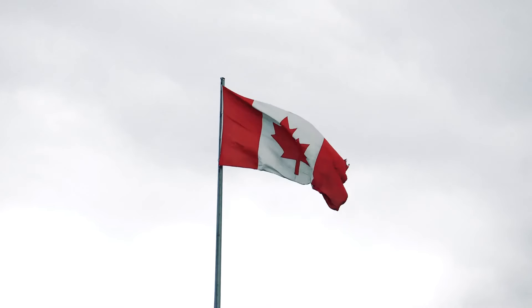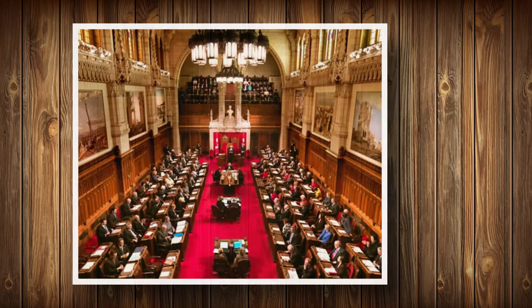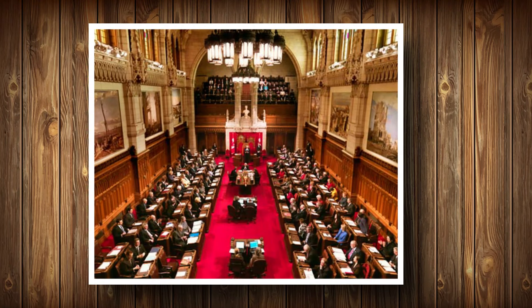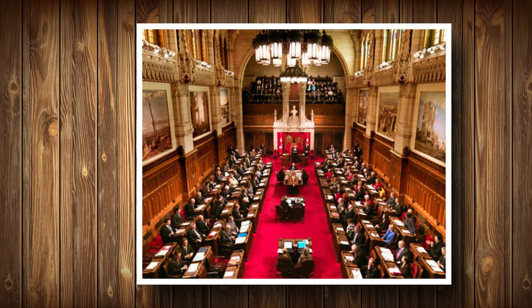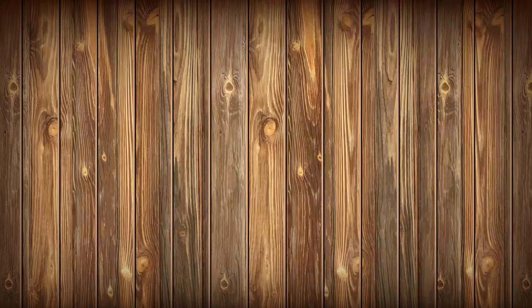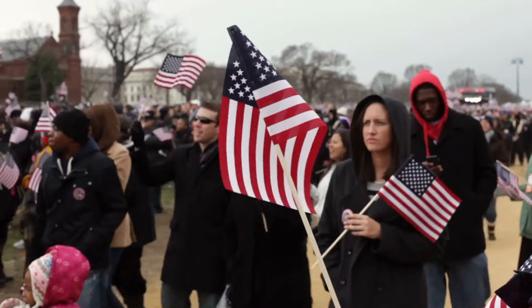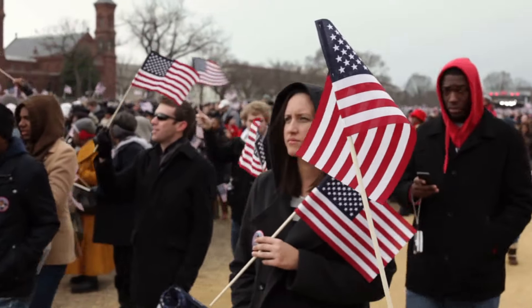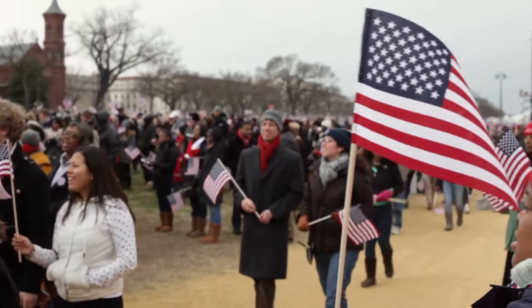Canada has three levels of government: federal, provincial, and municipal. Each of the provinces has its own Parliament, Legislative Assembly, or National Assembly in Quebec. The federal government has three branches: the Judicial, Legislative, and Executive. Unlike the American system, there is no strict separation of powers.